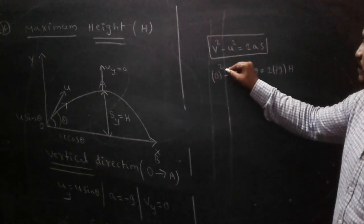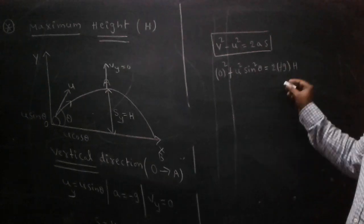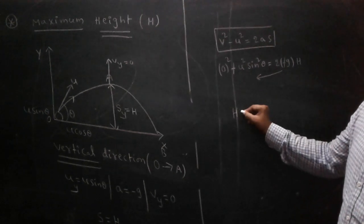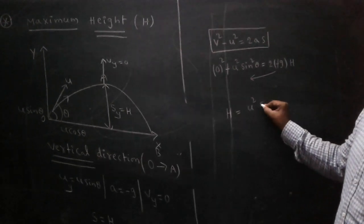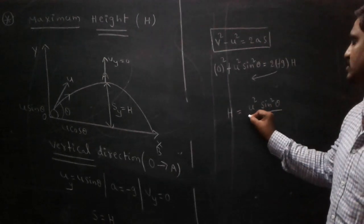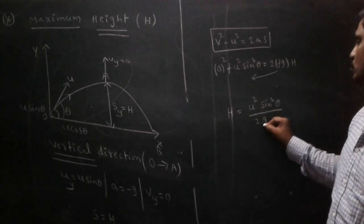Here, minus minus cancels. 2g goes to the other side as denominator. What is the formula for maximum height? U² sin² θ / 2g.